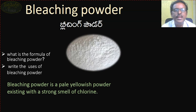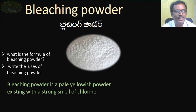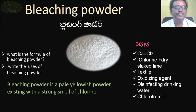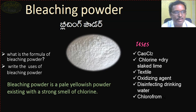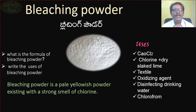Bleaching powder is a pale yellowish powder with a strong smell of chlorine. The formula is CaOCl2 — calcium hypochlorite. It is prepared from chlorine plus slaked lime. It is used in the textile industry as an oxidizing agent.